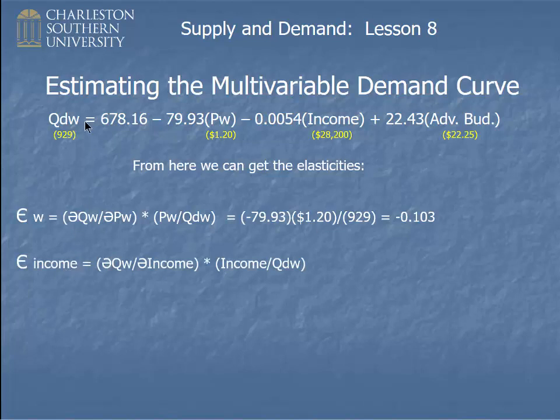Similarly, income elasticity is just a derivative of this thing with respect to income, right? Times the income value, which is that, divided by QDW, which is that. That works out to be this, right? So, income elasticity is minus 0.164.